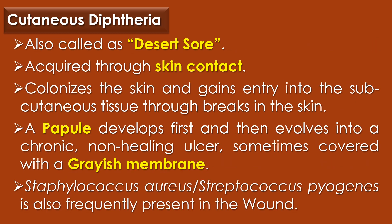The second clinical disease caused by Corynebacterium diphtheriae is cutaneous diphtheria, also called desert sore. Cutaneous diphtheria is acquired through skin contact with an infected person, and the organism colonizes the skin and gains entry into subcutaneous tissue through breaks in the skin. A papule develops first and then evolves into a chronic non-healing ulcer, sometimes covered with a grayish membrane.